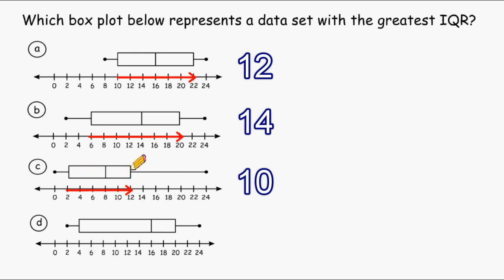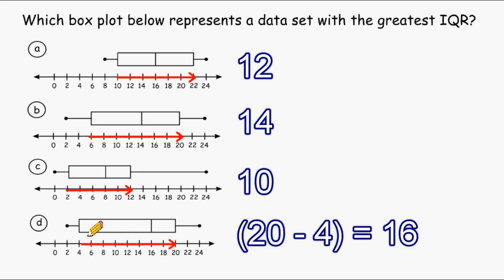Now let's take a look at box plot D. Q1 begins at 4 and goes all the way to 20. So Q1 is 4, Q3 is 20.